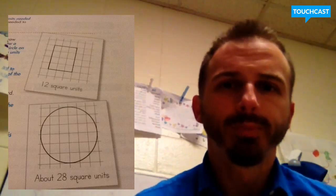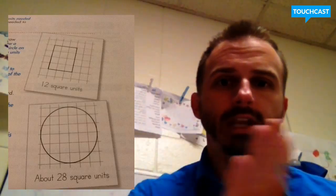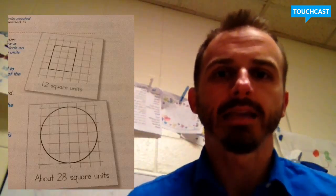Today we are going to talk about area. Area is similar to perimeter but different. Perimeter is measuring the distance around an object or shape, and area is defined as the measurement of the space that covers a region, or the area inside of a shape.